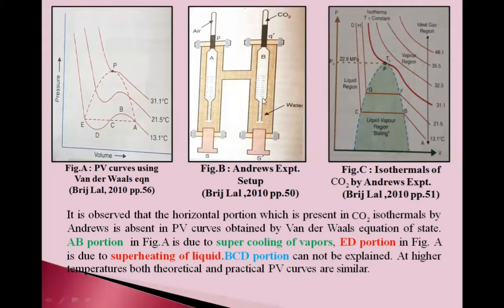Now we will compare PV curves by Van der Waals equation and PV curves by Andrews' experiment for CO2 gas. At 13.1 degrees Celsius, A to B is gaseous state. A to B can be explained as supercooling of vapors. And E to D, along ED, is supercooling of liquid.